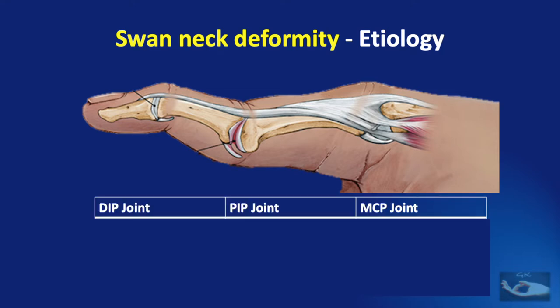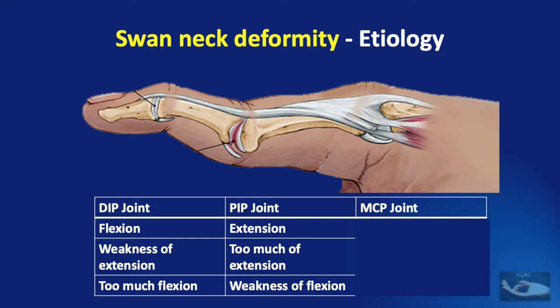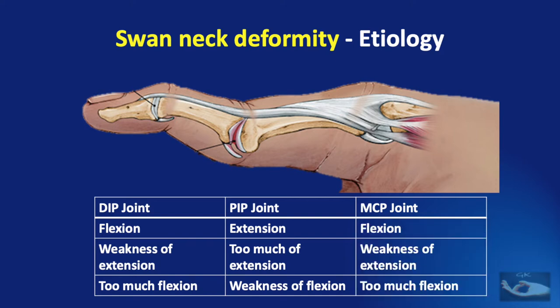How is it that such varied etiologies cause the same deformity? Basically this deformity consists of involvement of the distal interphalangeal joint, proximal interphalangeal joint, and metacarpophalangeal joint. At the distal interphalangeal joint there is flexion, caused by either weakness of extension or too much flexion. At the proximal interphalangeal joint there is extension, caused either by too much extension force or lesser force of flexion. The metacarpophalangeal joint is flexed, caused either by weakness of extension power or too much flexion power.